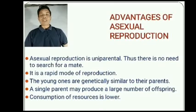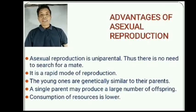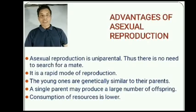Advantages of asexual reproduction: asexual reproduction is uniparental, so there is no need to search for a mate. It is a rapid mode of reproduction. The young ones are genetically similar to their parents. A single parent may produce a large number of offspring, and consumption of resources is lower in asexual reproduction.